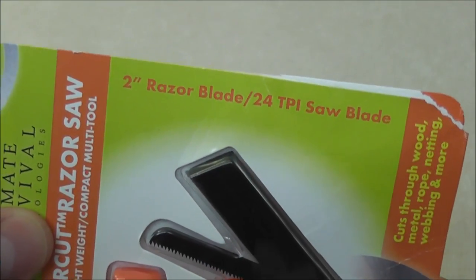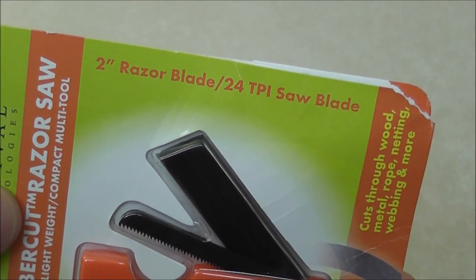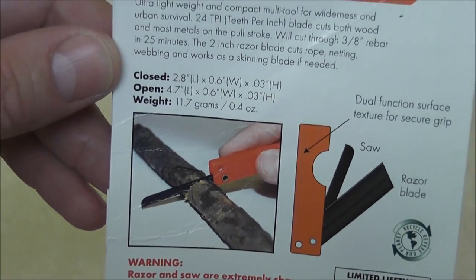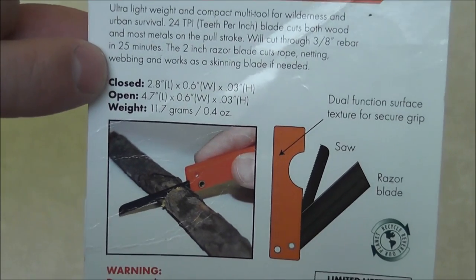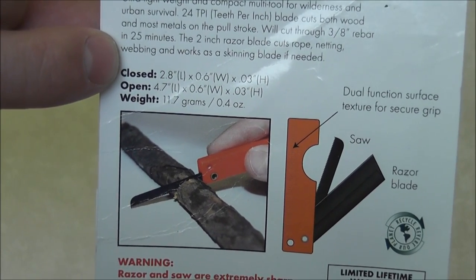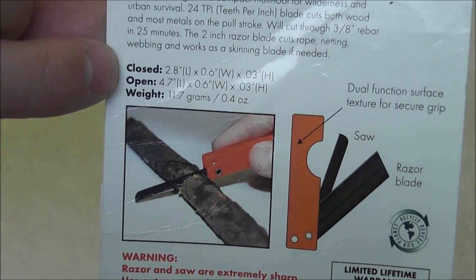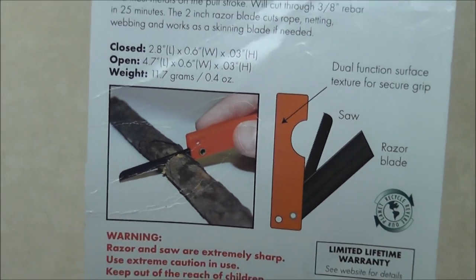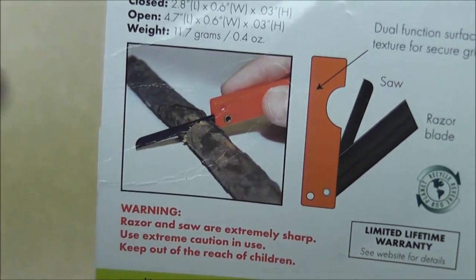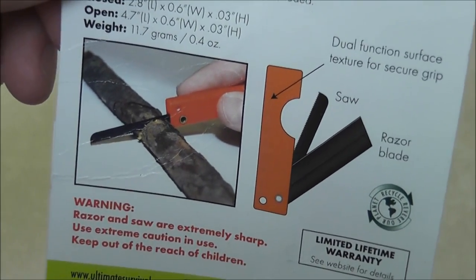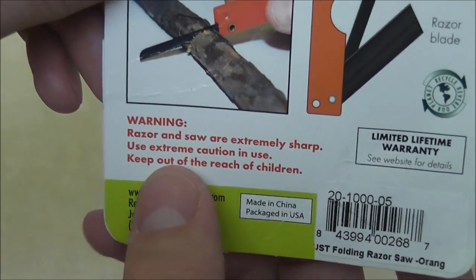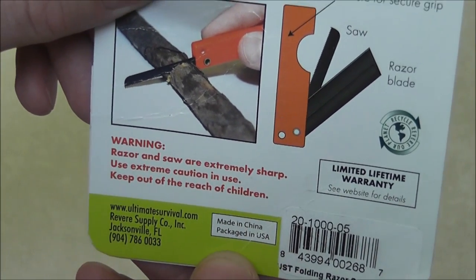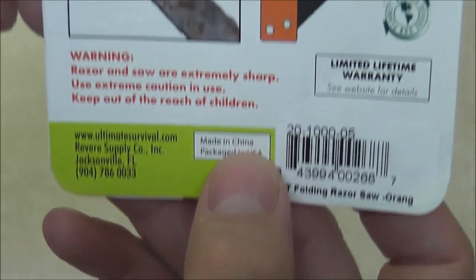It's a two inch razor blade, a 24 TPI saw blade. That's tooth per inch for those who don't know. You can see on the back here, it gives you some stats. It's 2.8 inches long closed, open 4.7. Weight is 0.4 ounces or 11.7 grams. You can see the dude here is cutting through a little sapling of some type, some small piece of wood. And down here it warns you razor and saw are extremely sharp. It is made in China, I noticed here.